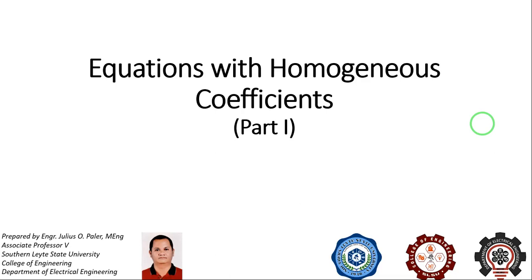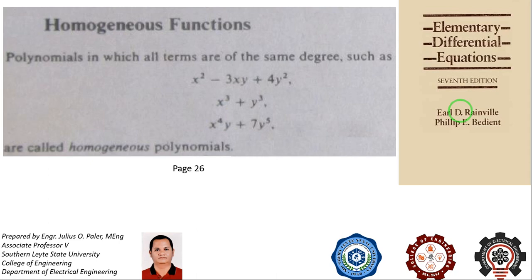The differential equations we are going to discuss are equations with homogeneous coefficients. Before we move forward with solving problems, let us first discuss how to identify this type of differential equation. It can be identified by inspection. Equations with homogeneous coefficients refers to the degree of each term in the polynomial — the degree of each term should be the same. That is why we call it homogeneous.